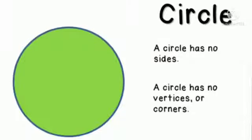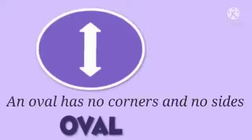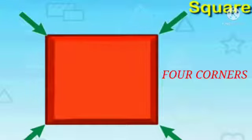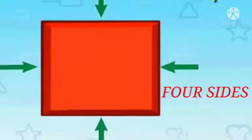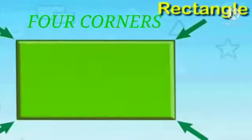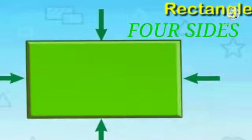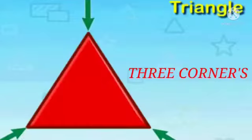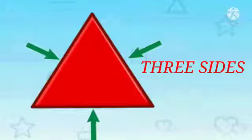A circle has no corners and no sides. An oval also has no corners and no sides. A square has 4 corners and 4 sides. A rectangle has 4 corners and 4 sides. A triangle has 3 corners and 3 sides.